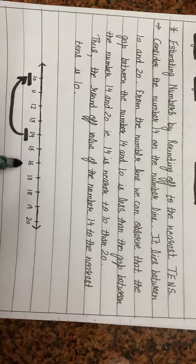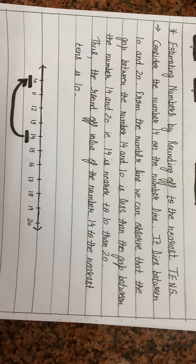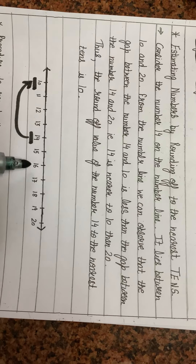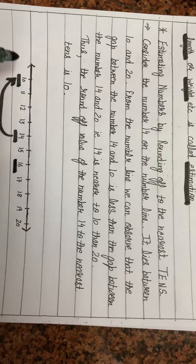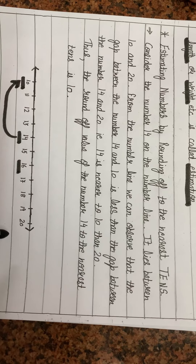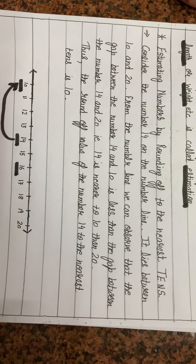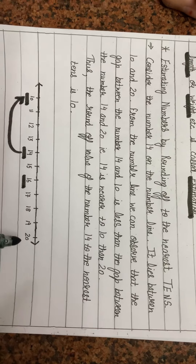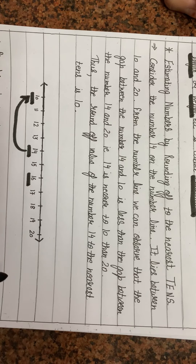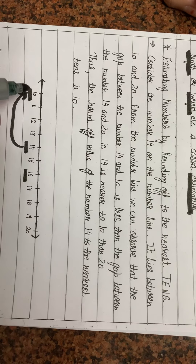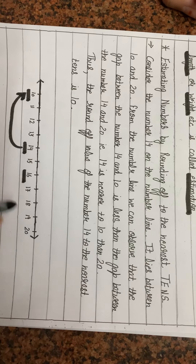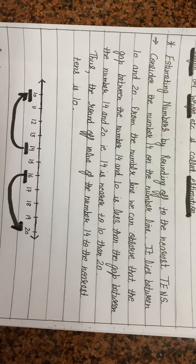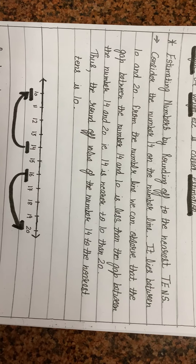Now let's look at another example: 16. It lies between 10 and 20. The gap between 10 and 16 is more as compared to the gap between 16 and 20. So the approximated value of 16 is 20, as the gap between 16 and 20 is less than the gap between 10 and 16.